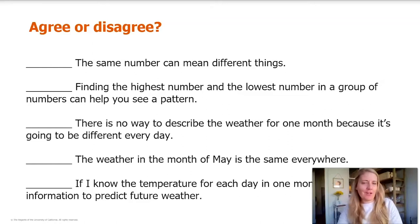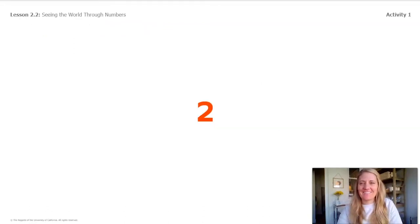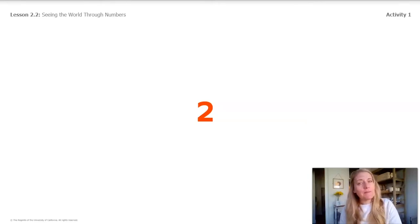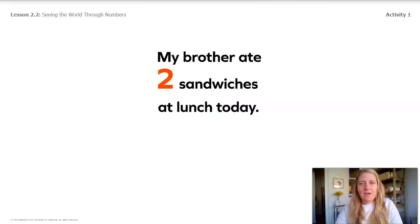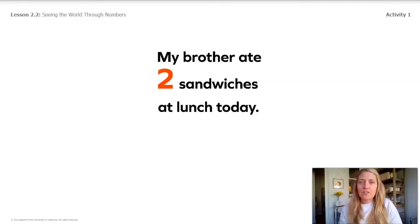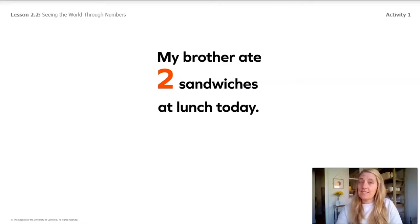Hopefully you wrote all your agrees and disagrees down. Now I want you to look very closely. This is an example of understanding numbers by visualizing what they mean. Look at this image — what does this mean? I bet you've already said it. This is the number two. Now let's read this sentence: my brother ate two sandwiches at lunch today. Notice the meaning has changed. Two now means the number of sandwiches my brother ate. Are you visualizing anything now?